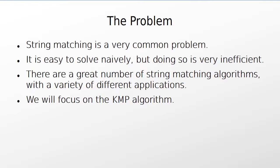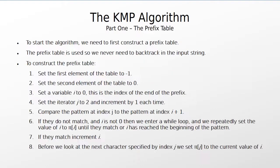There are a great number of better ways to solve the string matching problem, and we will be looking at the KMP algorithm. For the algorithm to work, we need to construct a prefix table, which tells us how far we can shift the pattern along at each step without missing any matches. Essentially this means the algorithm never needs to backtrack in the pattern or the input string.